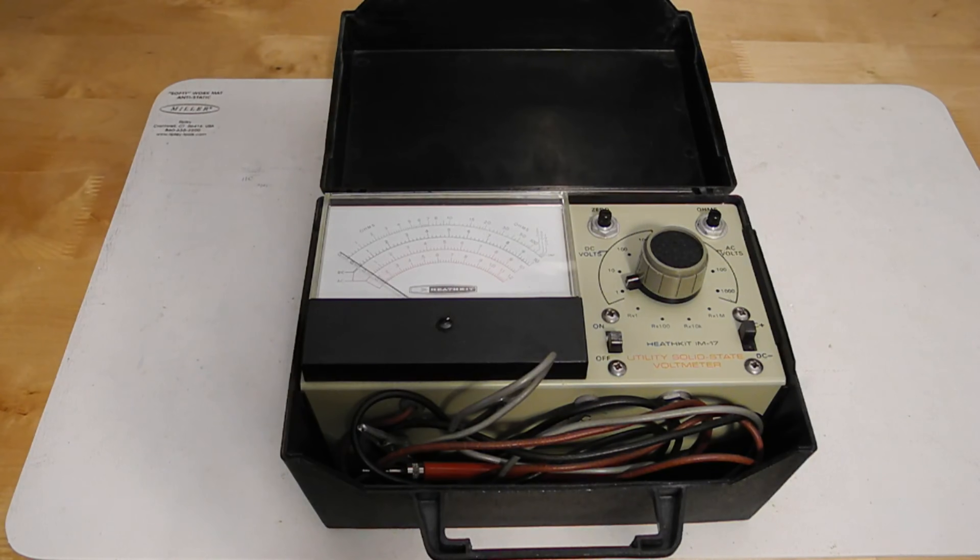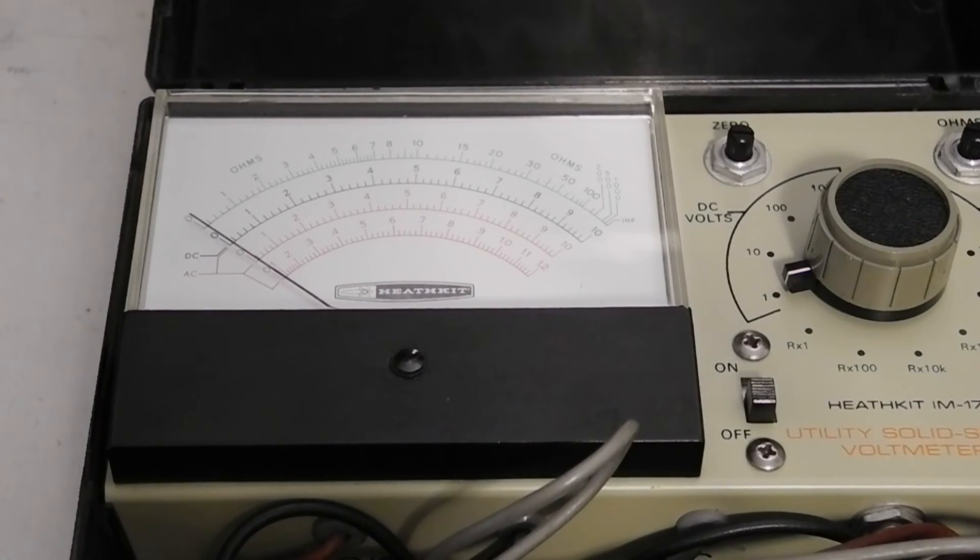The AC ranges respond to peak voltage and are calibrated for RMS based on a sine wave. It uses a 4.5 inch 200 microamp analog meter movement.